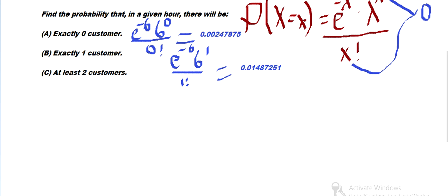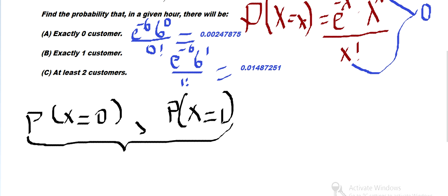We've got the probability there's zero customers, then one customer. We've got those two, and the sum of these two is 0.00247 plus 0.01487. We can combine those to get the total probability of being zero or one, and that gives us 0.01755.